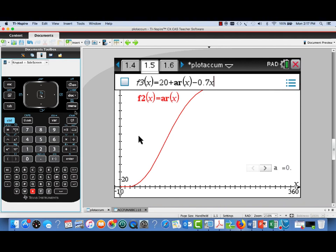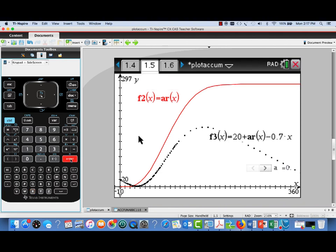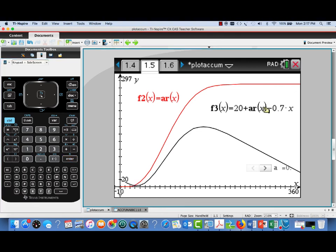All right, let's graph this new function and see what we get. And there we go. So this function F3 is giving us a running cumulative total of the number of people in the line at any time X. Well, that concludes this short video on plotting accumulation functions on the TI-Inspire.